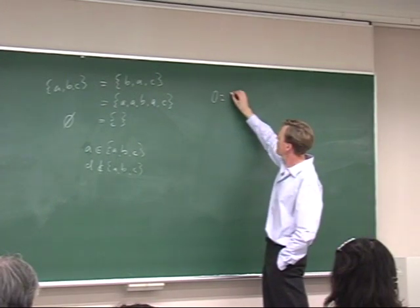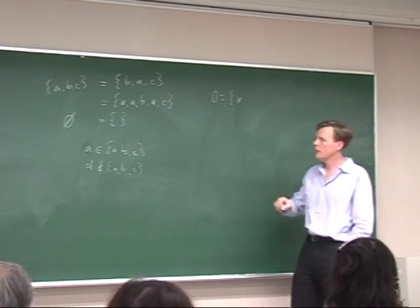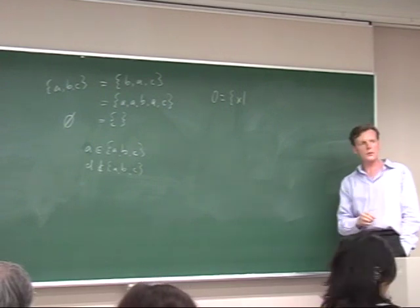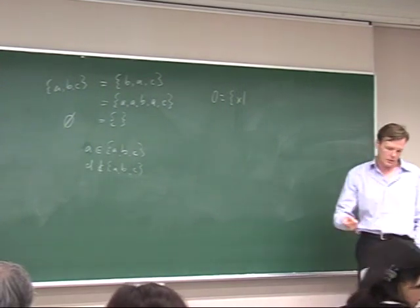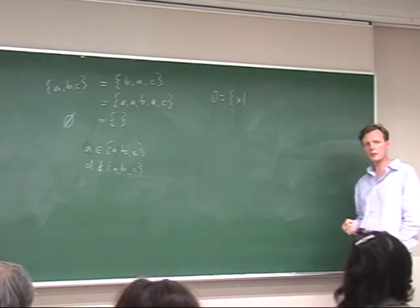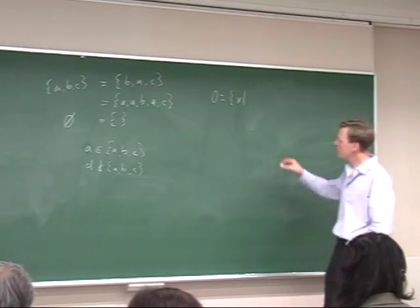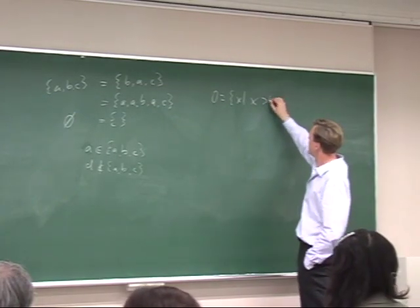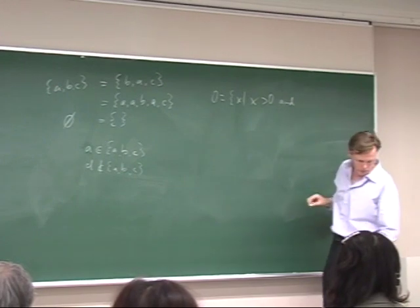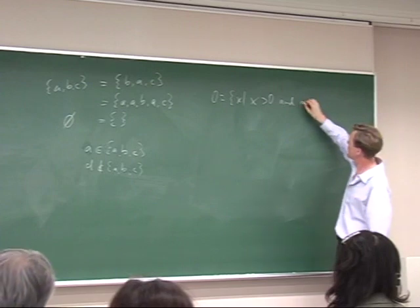Another common way of defining sets is with variables. The set of odd numbers is the set of things X such that there is some clause — some statement — that tells you what it takes to be a member. In this case, positive odd numbers: X is greater than zero and not divisible by two.